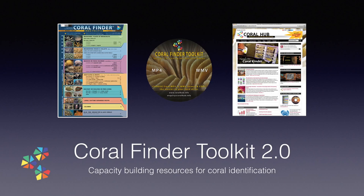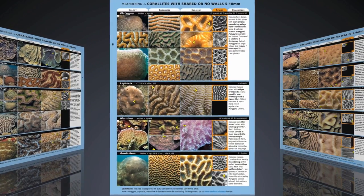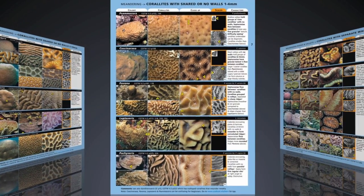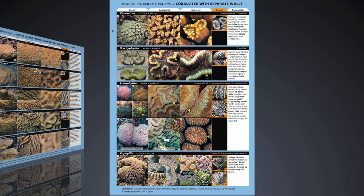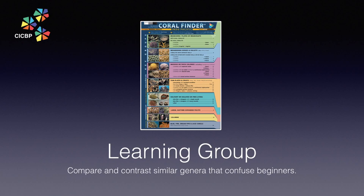Welcome to the fifth training movie in the Coral Finder Toolkit 2.0 Training Movie Series. In an action-packed previous movie, we introduced the meandering key group and learned some techniques for working with meandering corals in all their forms. Now we are going to explore the massive and thick colony key group using two learning groups to simplify some common problems. A learning group compares and contrasts small groups of Indo-Pacific coral genera that cause problems for beginners new to coral identification.